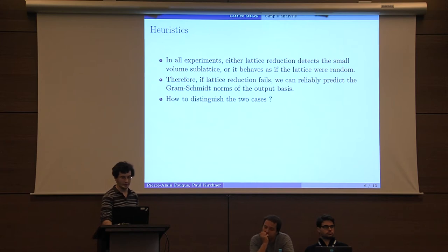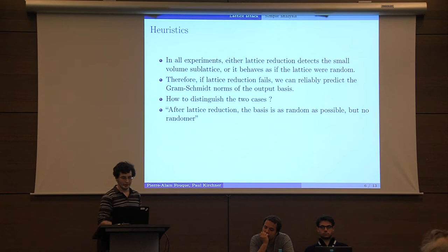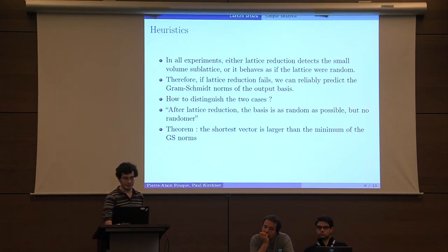How to distinguish the two cases? There is this property: after lattice reduction, the basis is as random as possible but not random. This means we have, for example, this theorem which says that the shortest vector of the lattice which is nonzero must be larger than the minimum of the Gram-Schmidt norms.